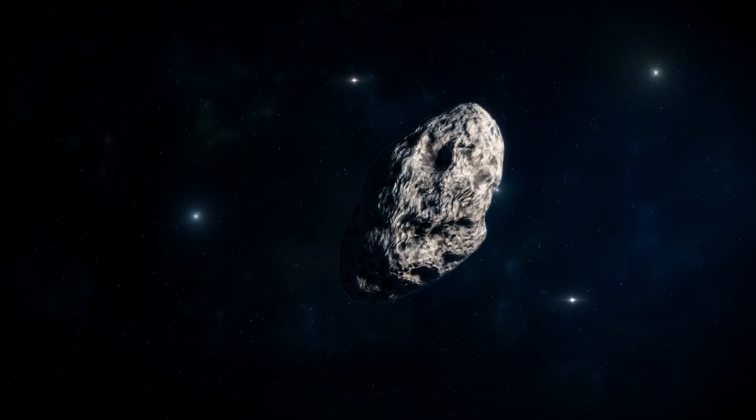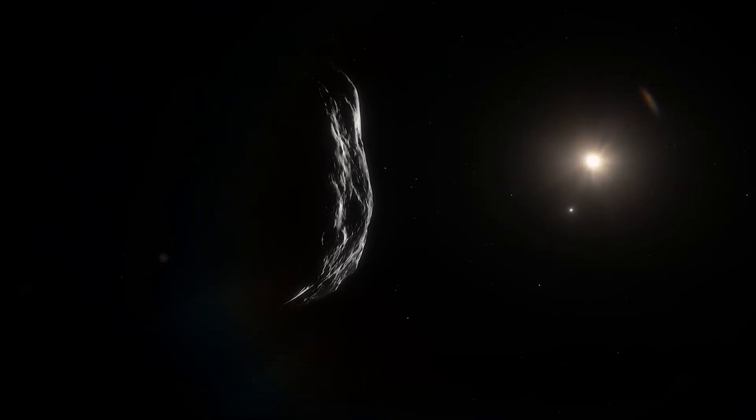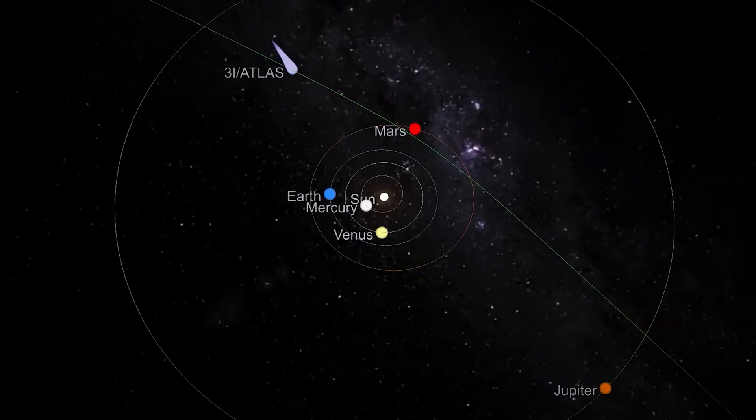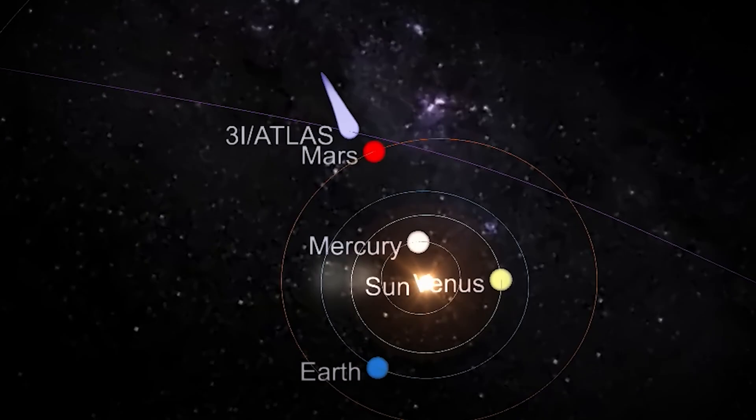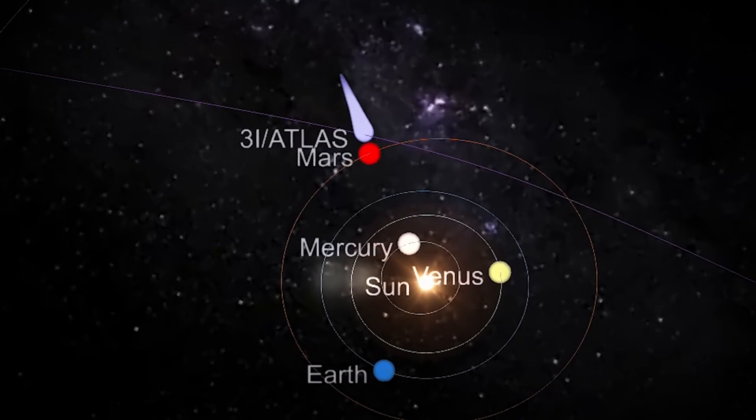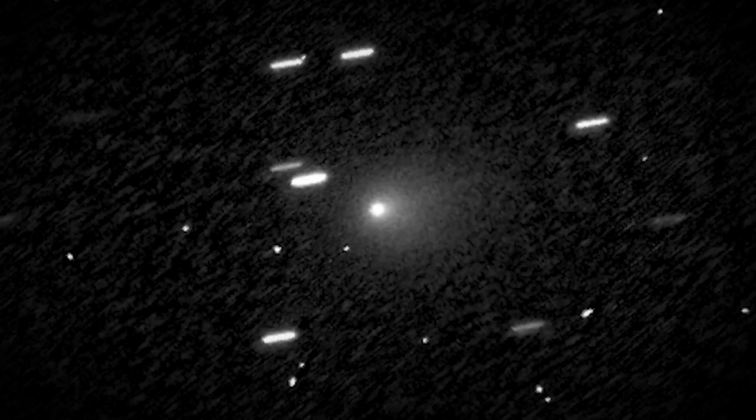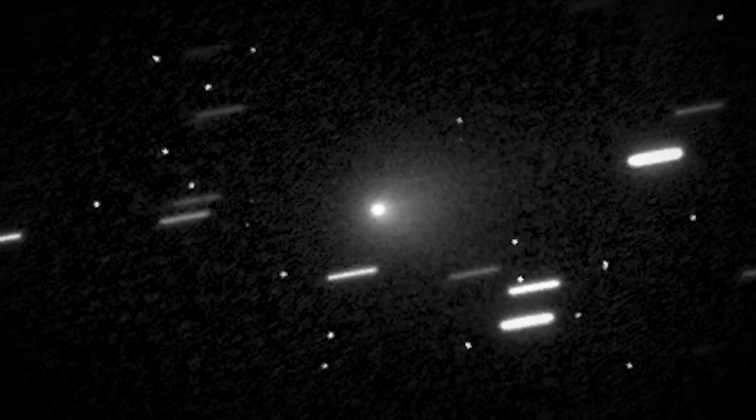Now here's the problem that's keeping physicists up at night. This object rotates. We know it spins because we've measured it. While these jets are forming over weeks, the object should be spinning dozens of times. Those jets should be spiraling out in all directions like a cosmic pinwheel. But they're not. They're maintaining perfect, straight lines in specific directions.